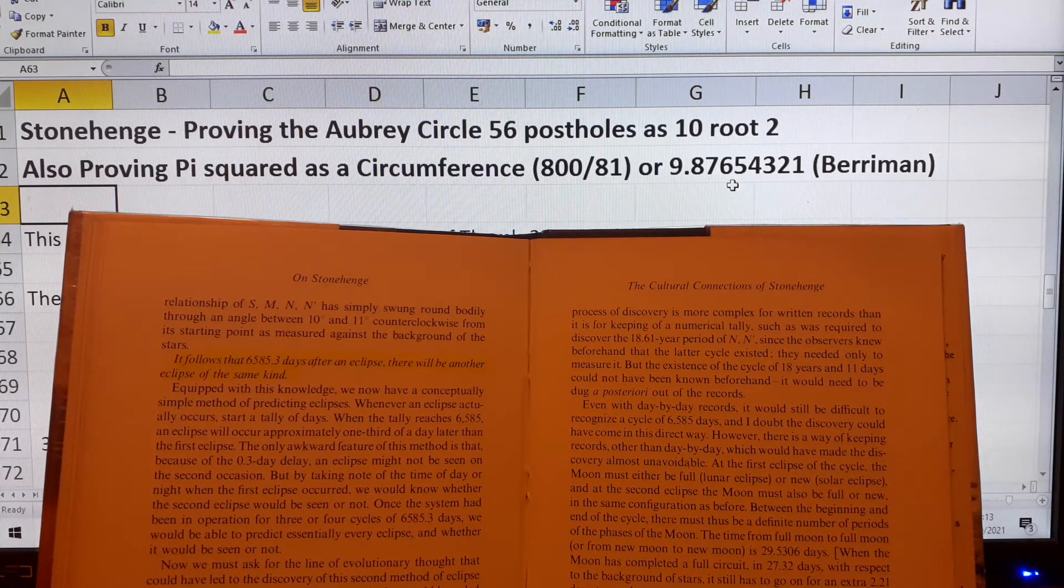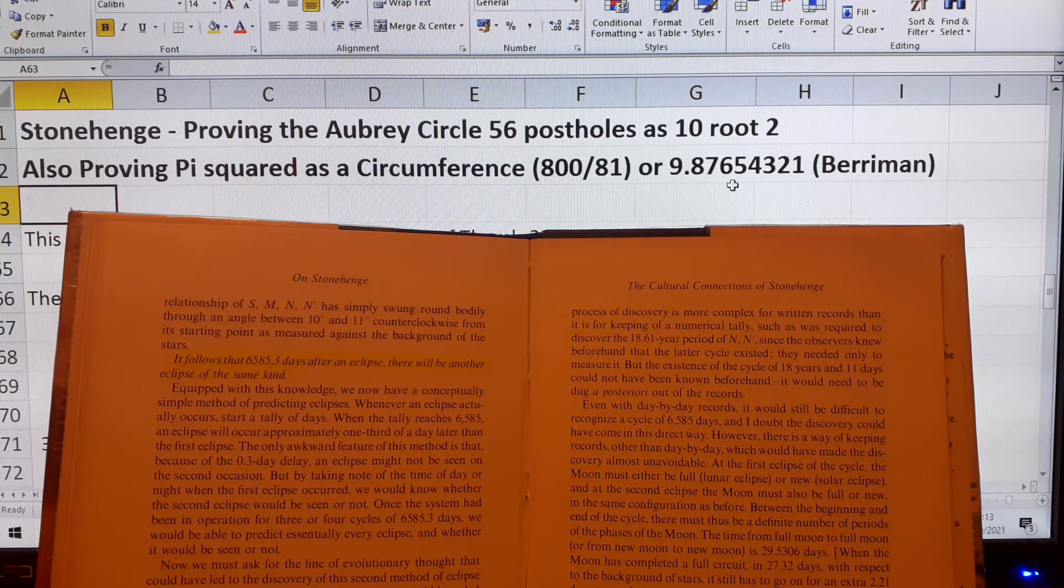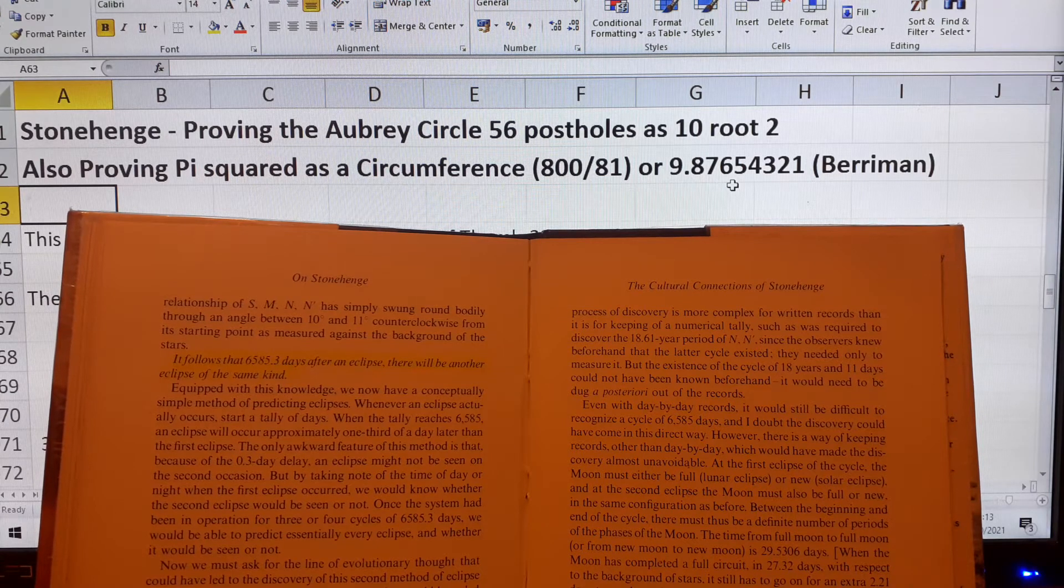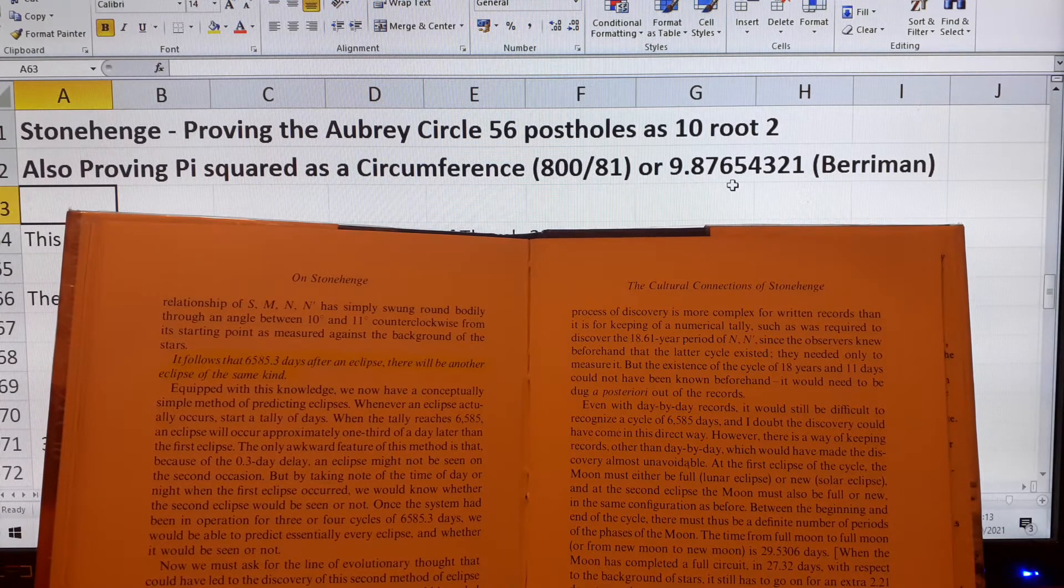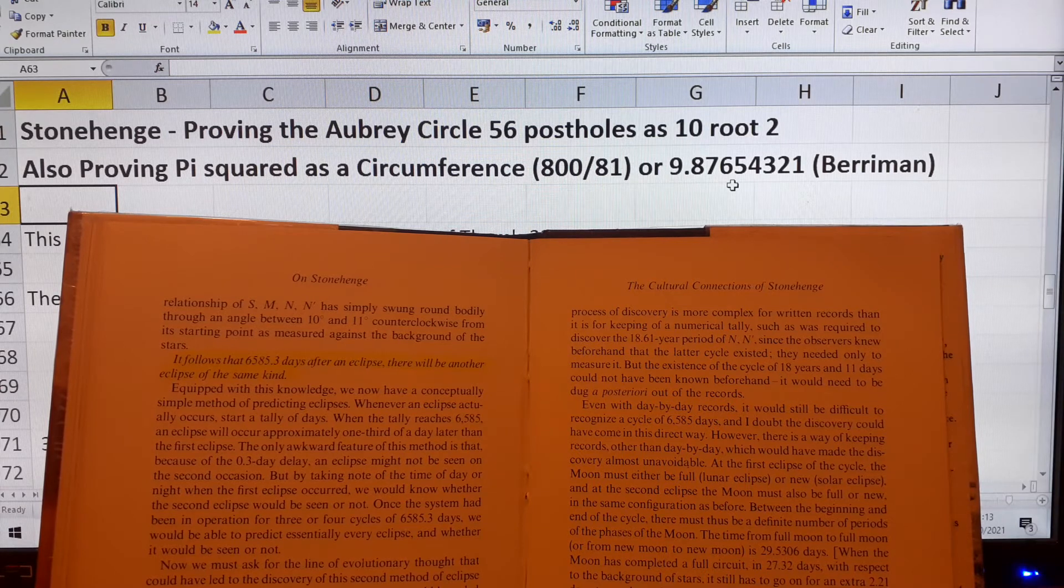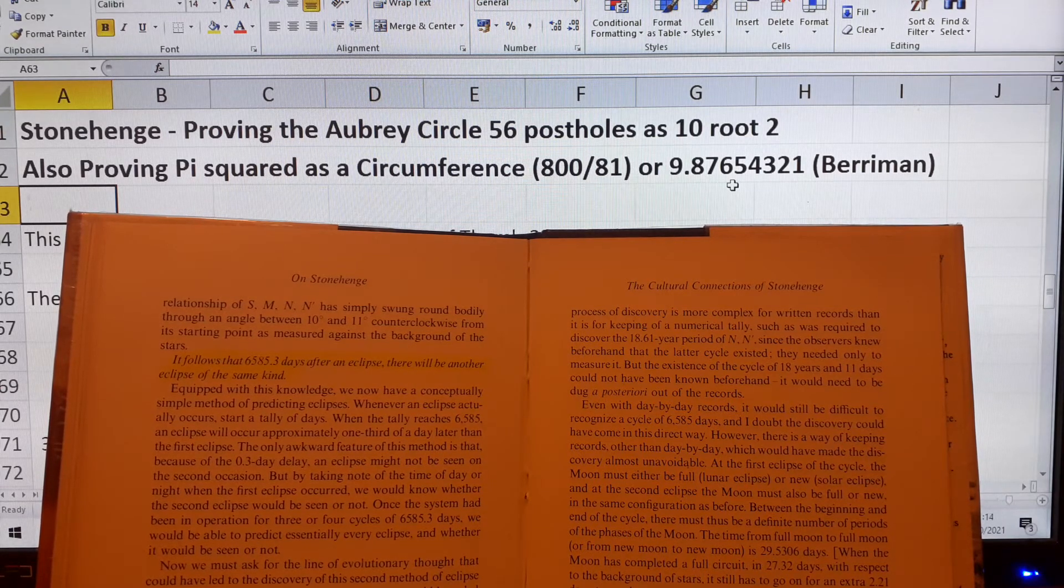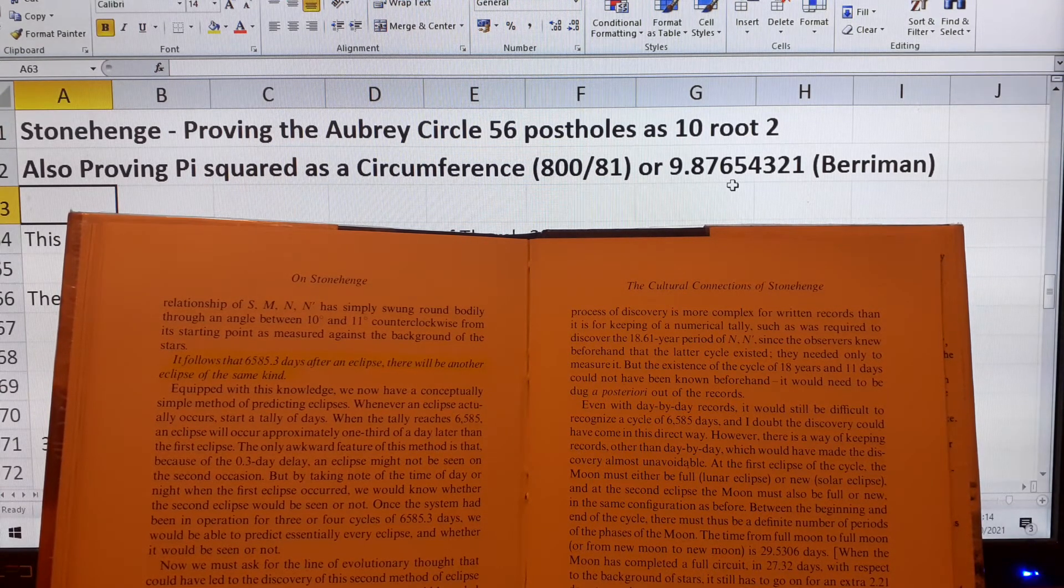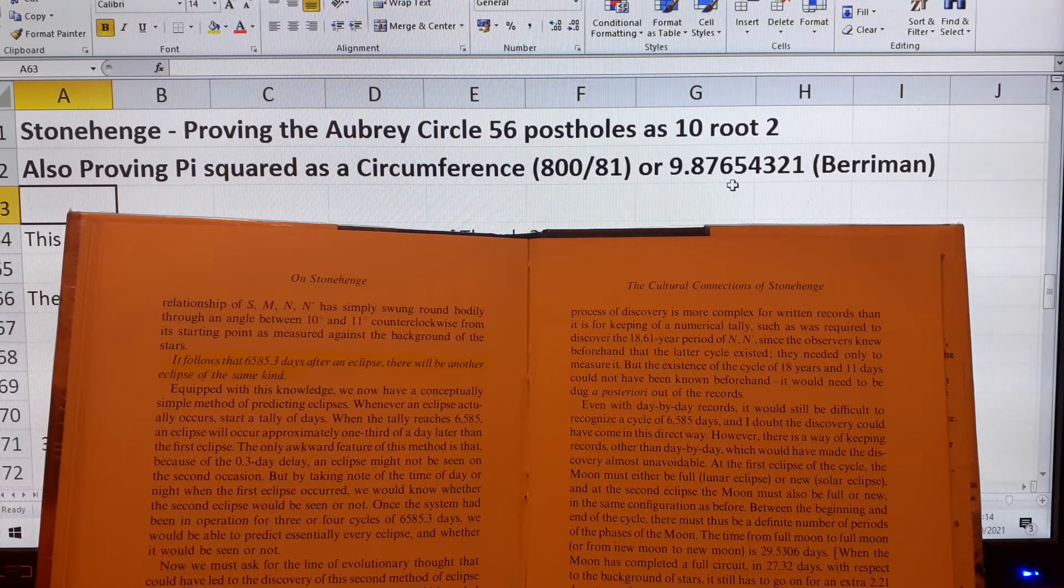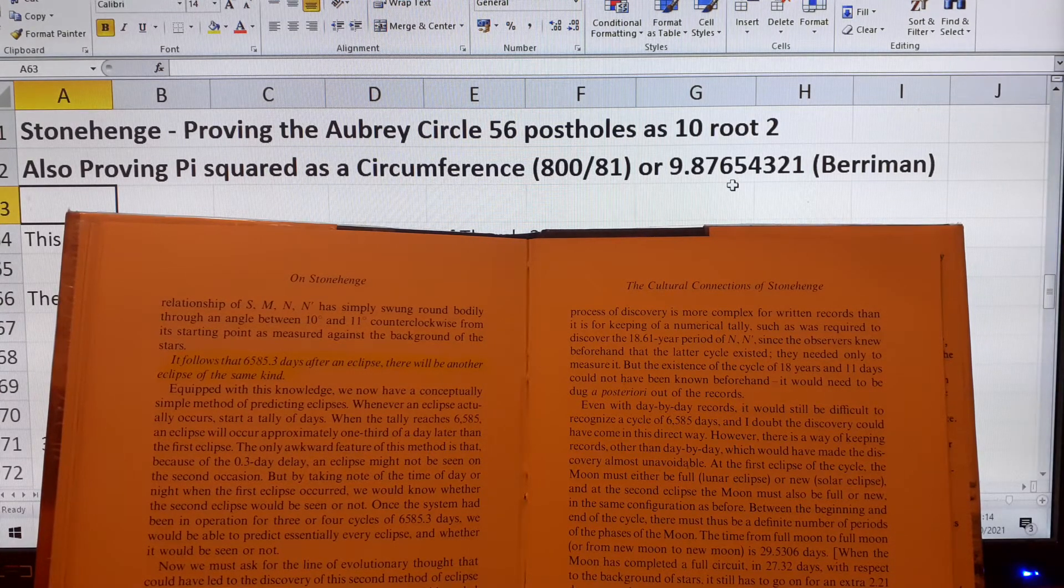He said they knew 29.5306, which they did. But when they worked it out at 6585.3, they realized if they divided that by 449, they got this unit of 14.666. But he was saying they were using 223 times 29.5306, which is correct. If you divide 29.5306 by 224.5, then multiply it by 223, you get 29.333 exactly. That's what they did.